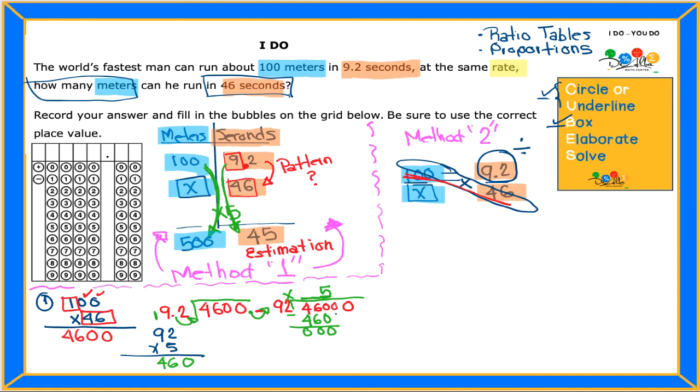Then we bring down the next digit, which is a zero. And then 92 into zero, it will be zero times. And then we have one more zero here that needs an answer here, and we finish all the digits. So when we multiply 100 times 46, and then we divide by 9.2, the answer is 500. And remember, the blue units are what? Meters.